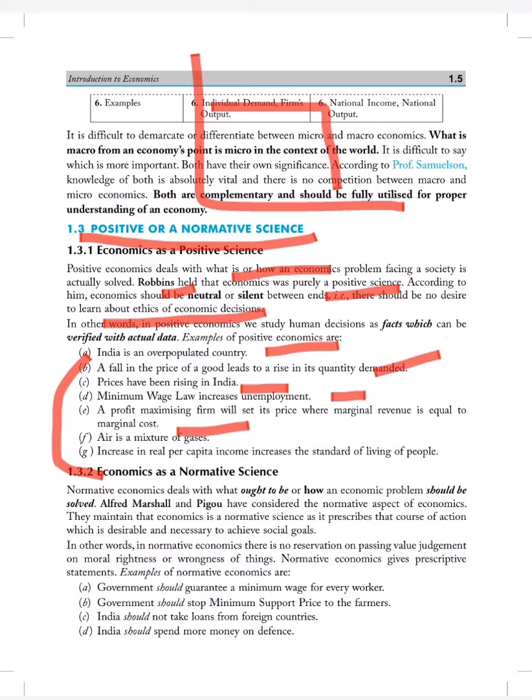Air is the mixture of gases. Increase in real per capita income increases the standard of living of people. Suppose you are earning 10,000 per month and now your income is 50,000 per month, your standard of living will automatically increase.